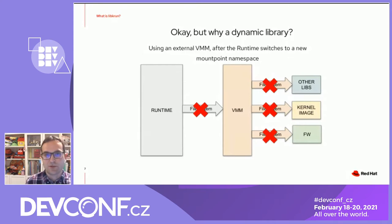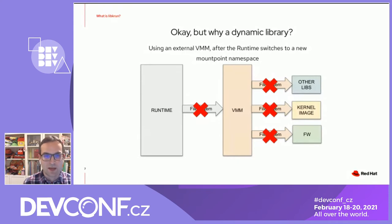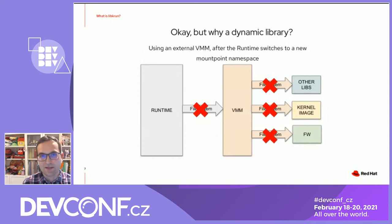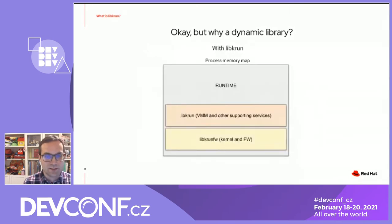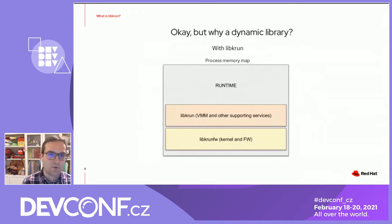So what happens if the runtime is using LibKRun? If the runtime is using LibKRun, it dynamically links against LibKRun and LibKRun firmware. The moment the runtime is executed, the dynamic loader gets all the components from LibKRun and LibKRun firmware inside the process memory map of the runtime itself. This way, the runtime can safely switch between contexts, can change to a different mount point namespace, and all the data and code needed to run the VM will be carried along with it.